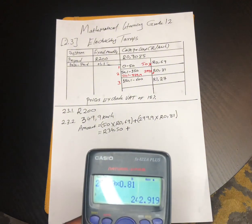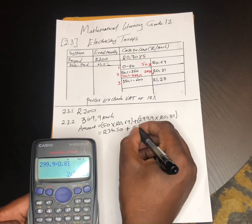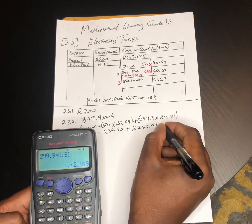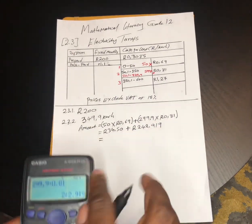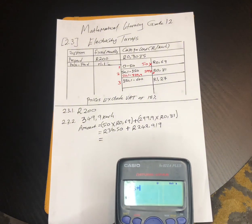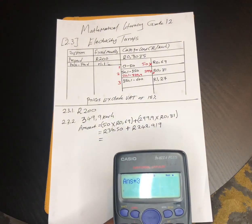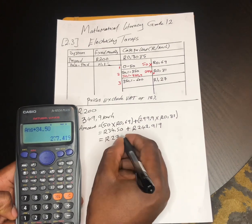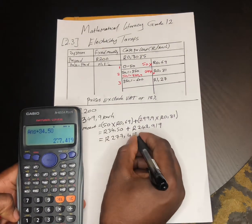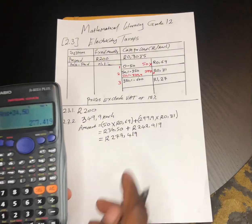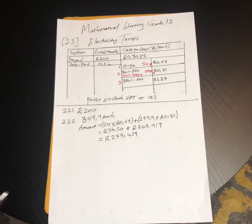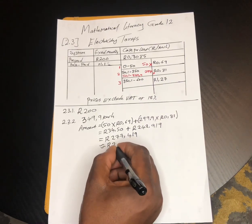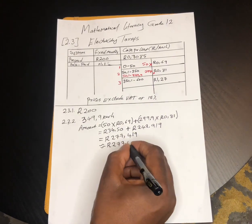We avoid rounding off during intermediate steps, so we keep 242.919. Adding the two results: 34.50 + 242.919 = 277.419 cents. Since this is money, the final answer must be rounded to two decimal places, giving R277.42.